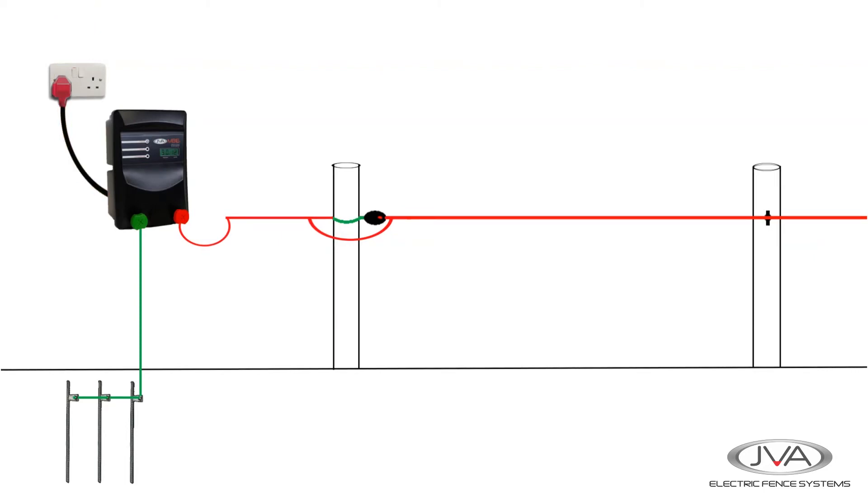Secondly we have the electric fence. What happens when lightning strikes the fence, it travels down the fence line and into the energizer causing damage.